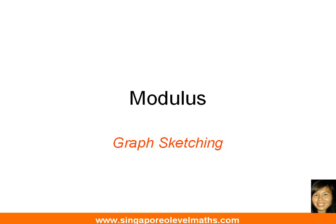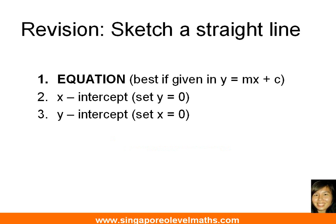Before I go into sharing some of the tips and steps, let us just recap on some of the basic things. For example, do you know how to sketch a straight line? What are the things that you need? First, you will need an equation, and it will be best if the equation is given in the standard form y equals to mx plus c. Next, you need to find the x-intercept by setting y equals to 0, and the y-intercept by setting x equals to 0.